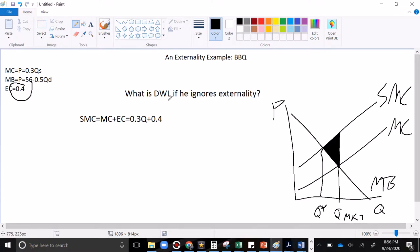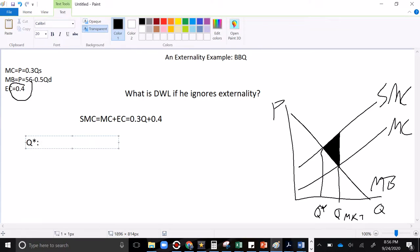So now we just need to solve for these two Q's. Solve for Q star first. I'm going to set my marginal social cost equal to the marginal benefit, which is going to be 0.3Q plus 0.4 equals 56 minus 0.5Q. Let's simplify. I'm going to add 0.5Q to both sides, subtract 0.4 from both sides. I get that 55.6 divided by 0.8 gives us Q equals 69.5. That's the optimal Q.